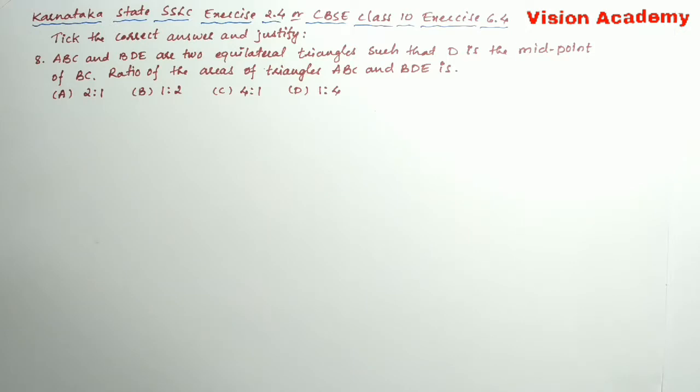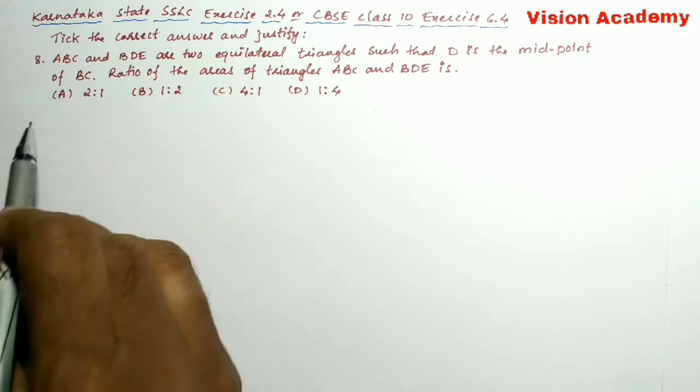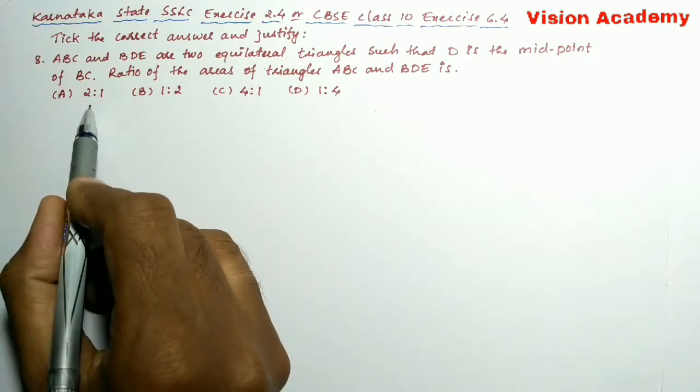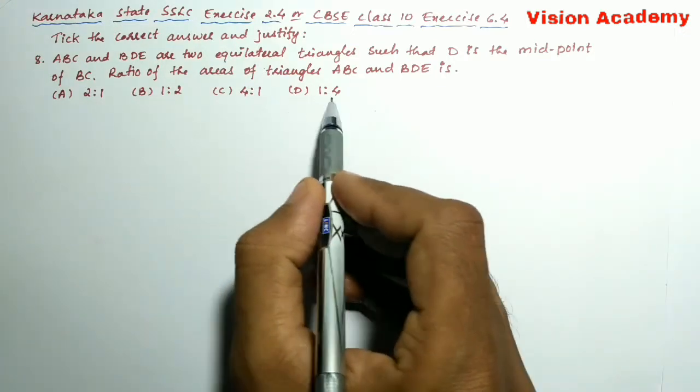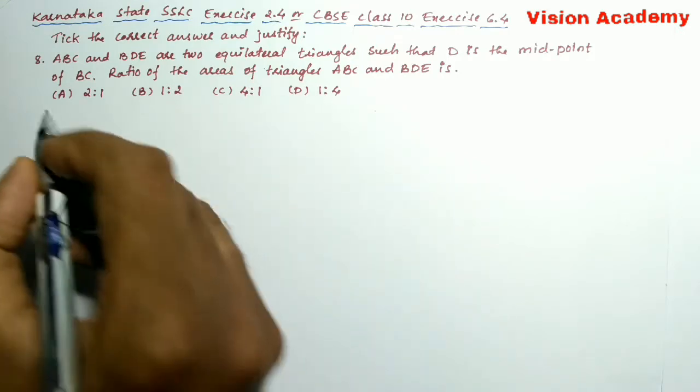ABC and BDE are two equilateral triangles such that D is the midpoint of BC. Ratio of the areas of triangle ABC and BDE is: Four options are given. A: 2 is to 1, B: 1 is to 2, C: 4 is to 1, and D: 1 is to 4.